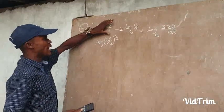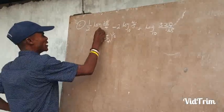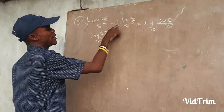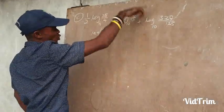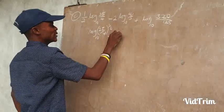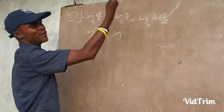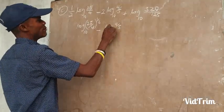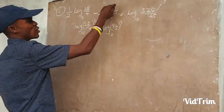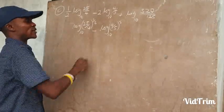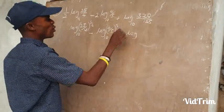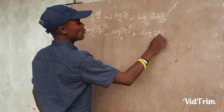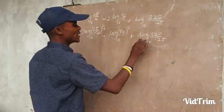The whole log here is 25 over 4. When you take the coefficient out, you raise everything to that power. We have base 10. Minus — the same thing applies: the 2 in front goes up as a power, giving log of (4/5) to the power 2, base 10. Plus log of 320 over 125 base 10.